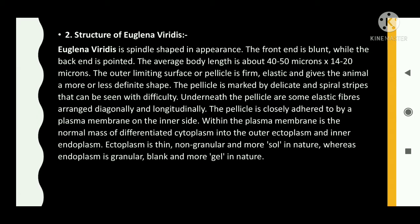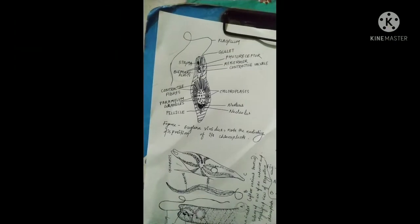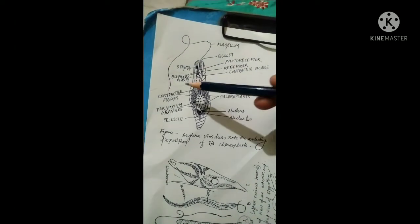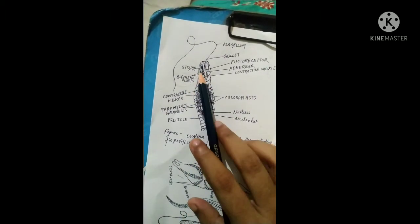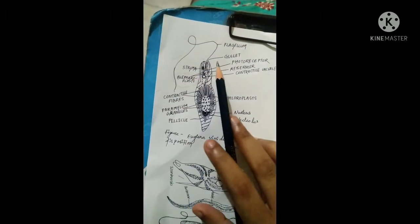Within the plasma membrane is the normal mass of differentiated cytoplasm, divided into the outer ectoplasm and inner endoplasm. Ectoplasm is thin and non-granular, more sol in nature, whereas endoplasm is granular and more gel in nature. This diagram for Euglena viridis briefly describes the disposition of its chloroplasts.